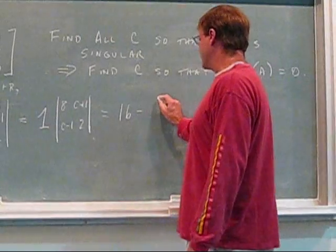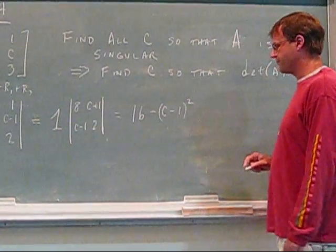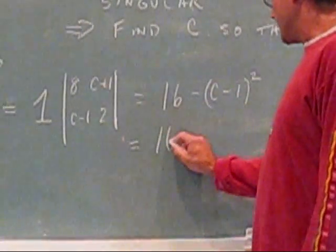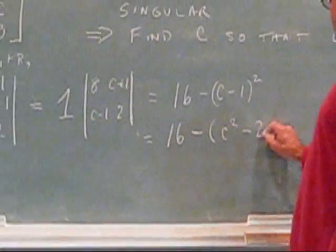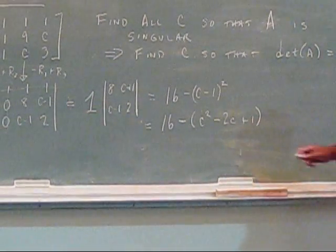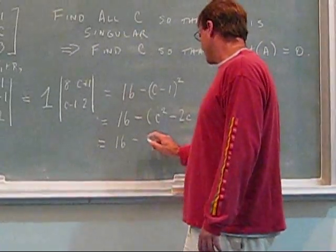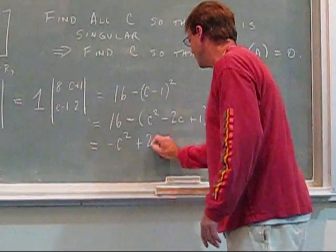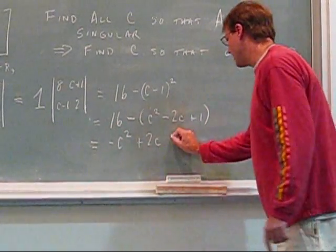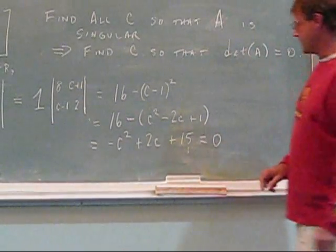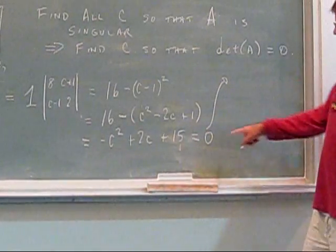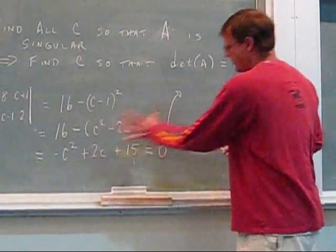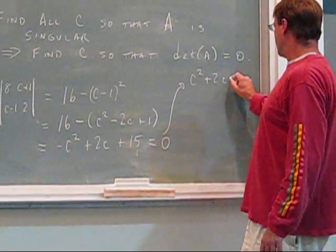That determinant is 16 minus (C minus one) squared. Simplifying: 16 minus C squared minus 2C plus one, which equals negative C squared plus 2C plus 15. We're setting that equal to zero.